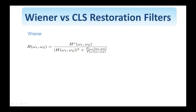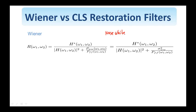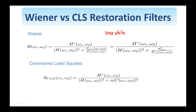Here is the expression again of the frequency response of the non-causal Wiener restoration filter we just derived. I have divided numerator and denominator by P of F, and this is the form we end up with. A common assumption is that the noise is white, which means its power spectrum is flat and more specifically it's equal to the variance of the noise. So in this case, this is the form of the Wiener restoration filter. Let us compare it now with the constrained least squares filter, so this is now the frequency response of the CLS filter.